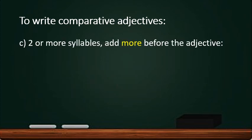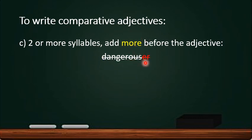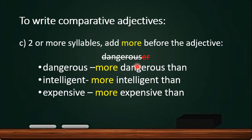When we see a long adjective — one with two or more syllables — we have to add more before the adjective. For example, dangerous is a long adjective, so we cannot simply add -er behind the word. We keep the word unchanged and add more before it: dangerous becomes more dangerous than. Same goes for intelligent — it has more than two syllables, so it becomes more intelligent than. Expensive becomes more expensive than.